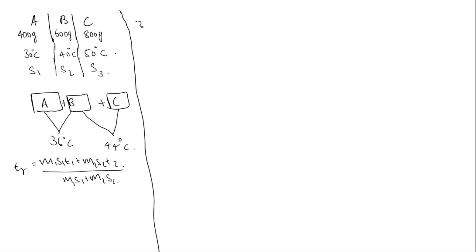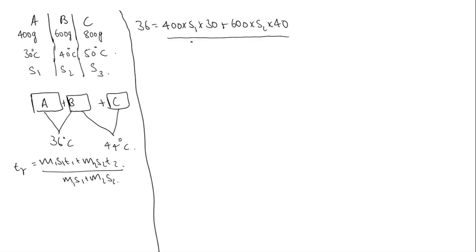The resultant temperature is 36 degrees Celsius. M1 is mass of liquid A, S1 is specific heat of liquid A, and T1 is temperature of liquid A. Plus M2 is mass of liquid B, that is 600, into S2, into T2, temperature is 40 degrees Celsius. Divided by M1, mass of liquid A, S1, plus mass of liquid B into S2.